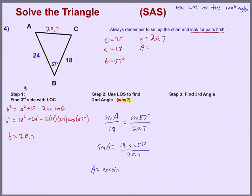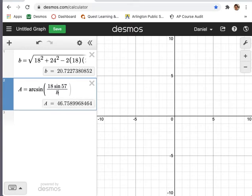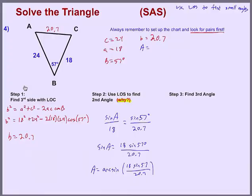So angle A is the arc sine, the angle whose sine is whatever this fraction turns out to be. I'm just going to go to Desmos and type it all in. Resist the temptation to enter things like sine of 57 into Desmos and turn it into a decimal. Just keep calling it the sine of 57 until you're ready to type it in. Angle A equals arc sine of 18 times the sine of 57 over our side B, 20.7. And that angle A is 46.75 degrees, which you are welcome to round to 47 degrees.